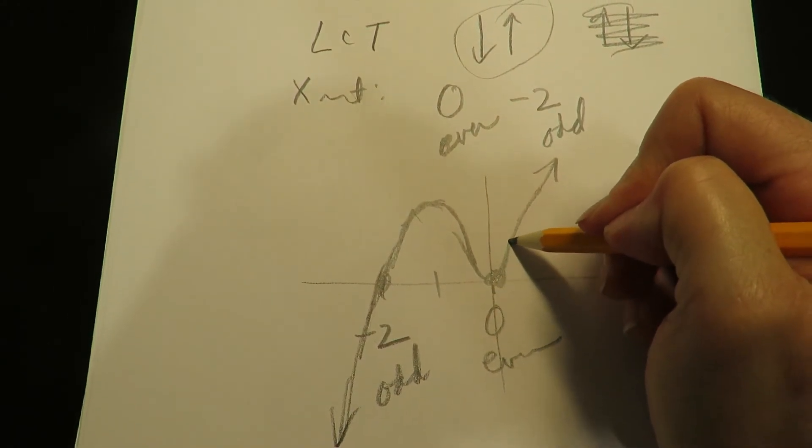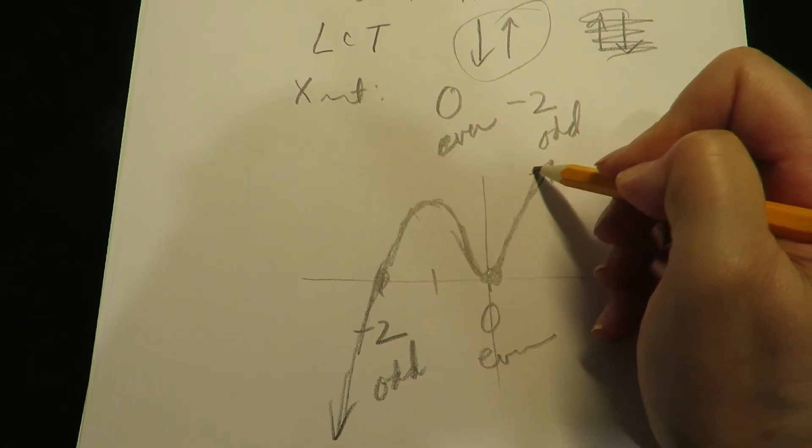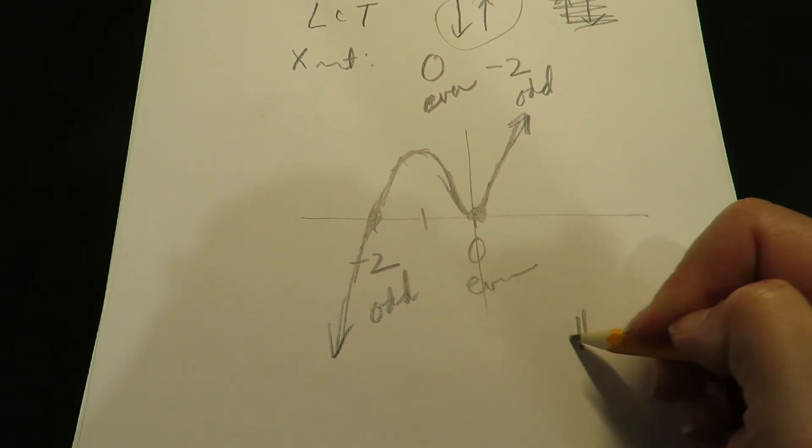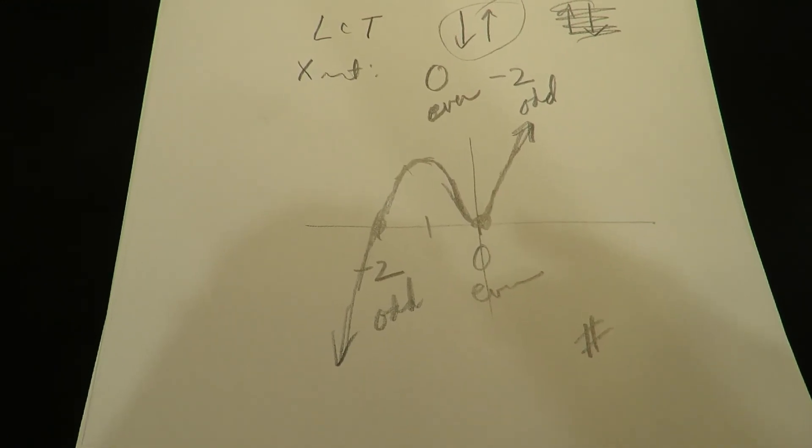Then you have to turn around. This guy's even, so it means it stays on the same side. It looks parabolic. All right gang, so that's the final answer for this one. Hope that helps, catch you.